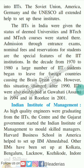In the decade from 1970 to 1980, a large number of IIT students began to leave for foreign countries, causing the brain drain crisis. However, this situation changed after 1990. IITs were also established at Guwahati, Assam in 1994 and in Roorkee in 2001.